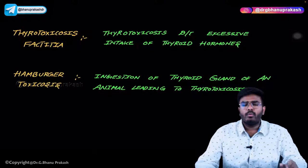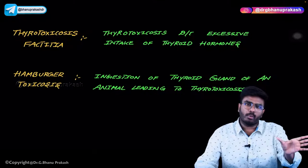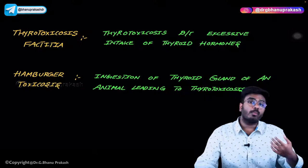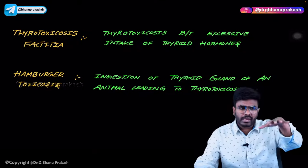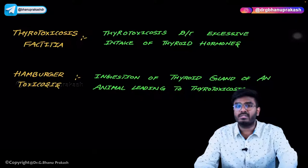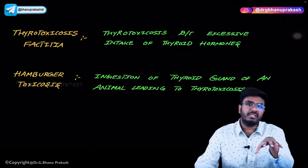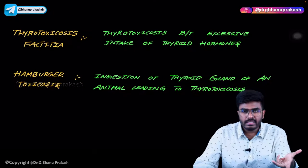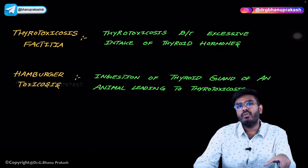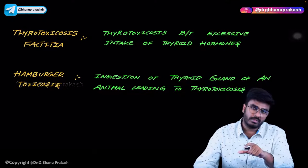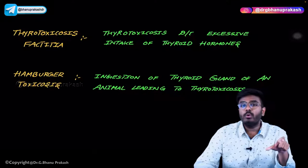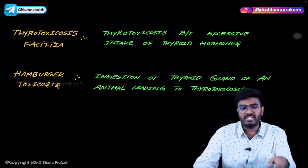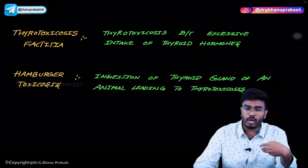Why would a person consume excessive thyroid hormones? Thyroid hormones are catabolic — they increase basal metabolic rate, cause lipolysis, and decrease body weight. Imagine an obese person who knows the actions of thyroid hormones. That person starts abusing thyroid hormones, taking excessive amounts.